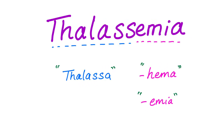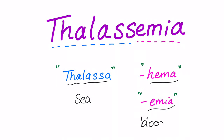But what does the word even mean — thalassemia? Thalasse means sea in Greek. Emia or hema means blood. So it's a blood disorder due to a problem related to the Mediterranean Sea — Italy, for example, North Africa, etc.